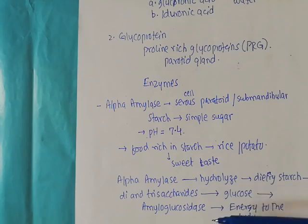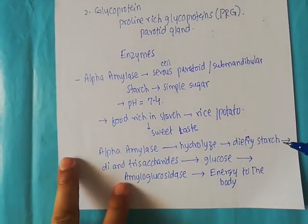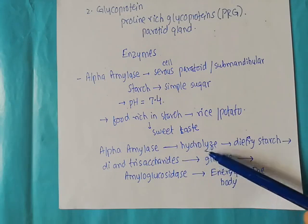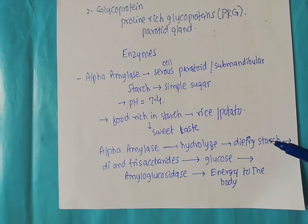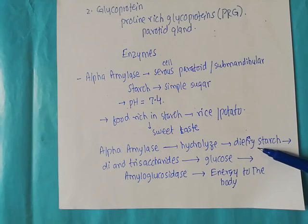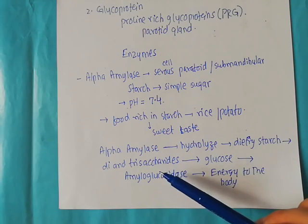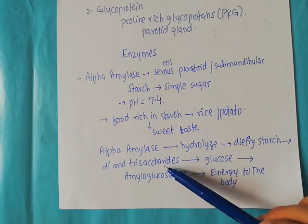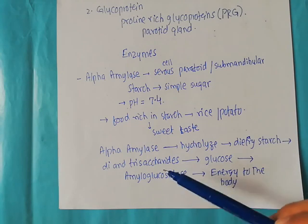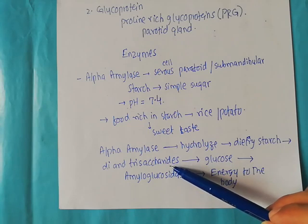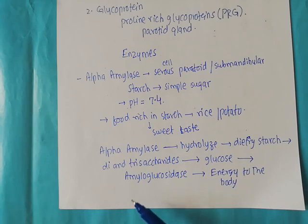Looking in detail at how alpha amylase works: it is responsible for hydrolyzing the dietary starches present in our diet, converting them into di- and trisaccharides. However, our body cannot utilize di- and trisaccharides directly as a form of energy.